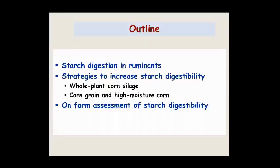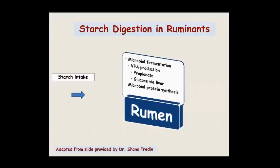Starch digestion in ruminants is slightly different from humans. Humans have salivary amylase that degrades starch, but ruminants do not. In ruminants, starch digestion starts primarily in the rumen through microbial fermentation. Those microbes have enzymes that degrade starch and produce VFAs, mainly propionate. Propionate is a precursor to glucose in the liver, so more propionate means more glucose and more energy available for the animal.